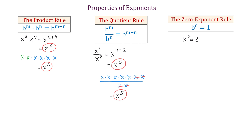Now to understand why this exponential expression equals 1, let's look into the following example. Let's say we have x to the fourth power divided by x to the fourth power. To simplify this expression, according to the quotient rule, we need to subtract the exponents. So then we will have x to the power of 4 minus 4, which equals x to the zero power. As you see, we can get a zero exponent when in a quotient the exponents are the same.